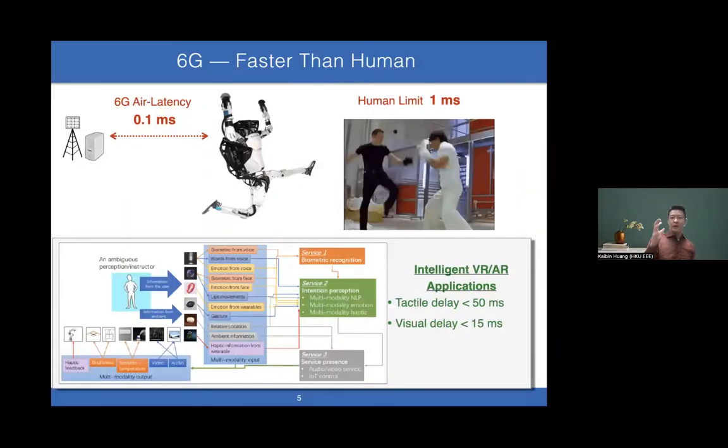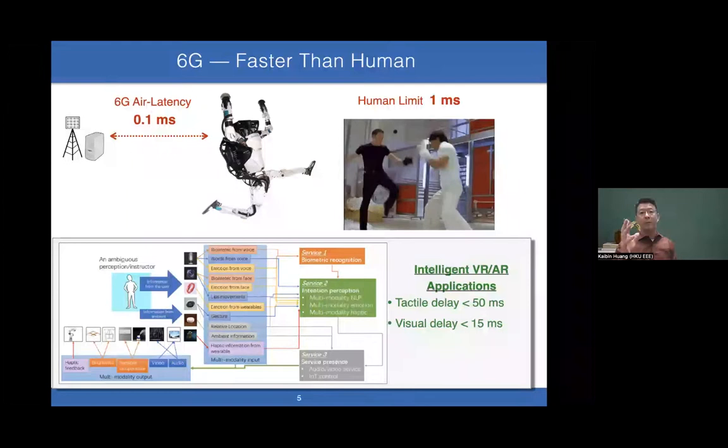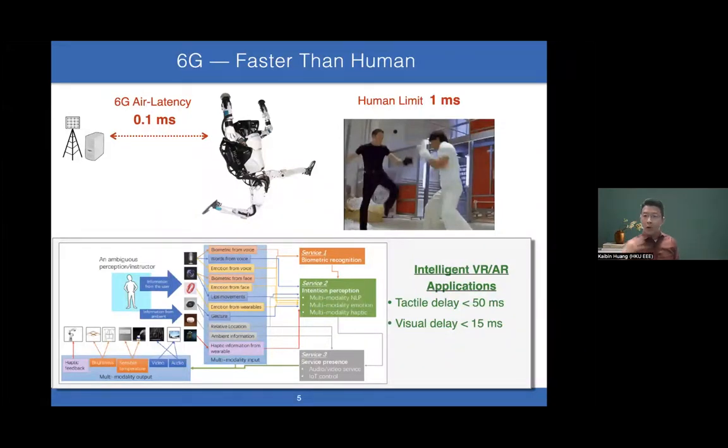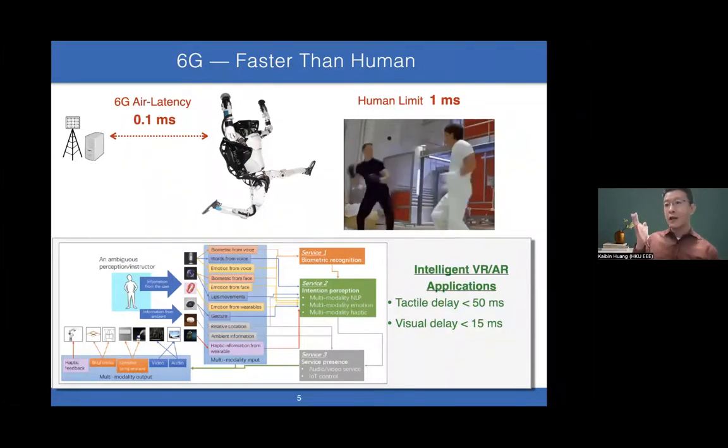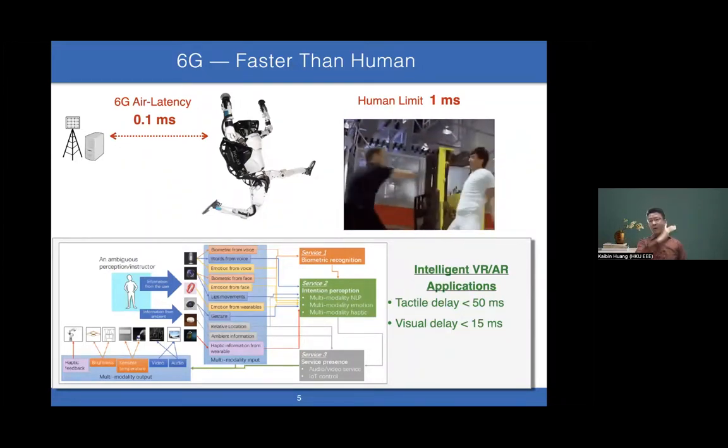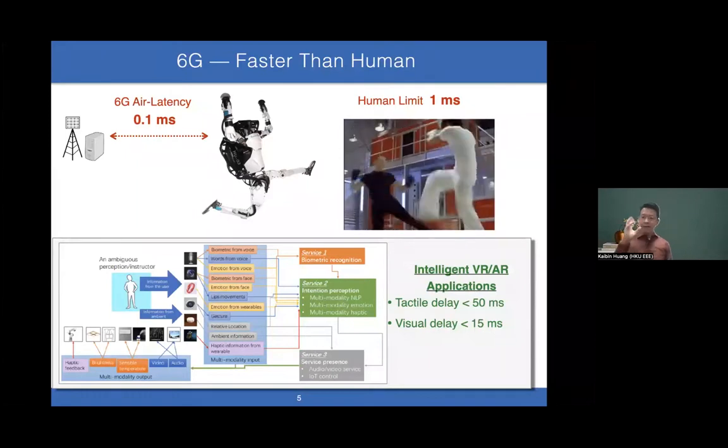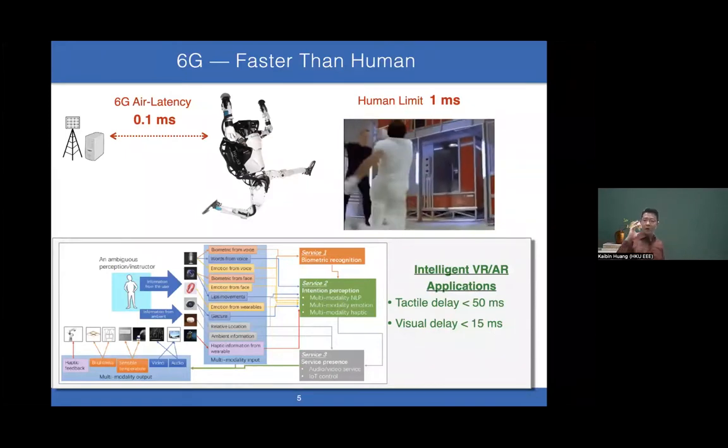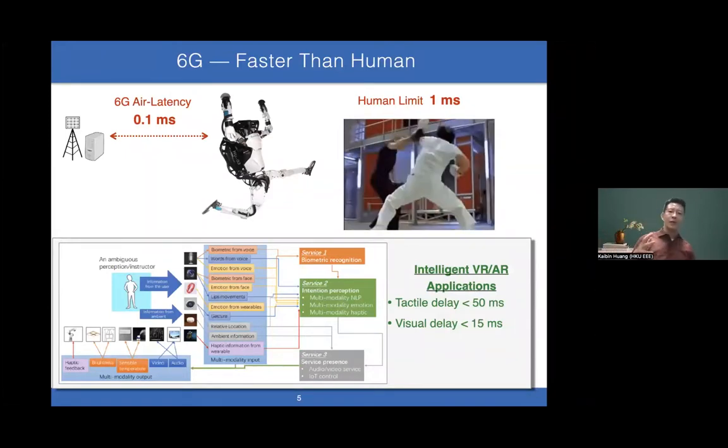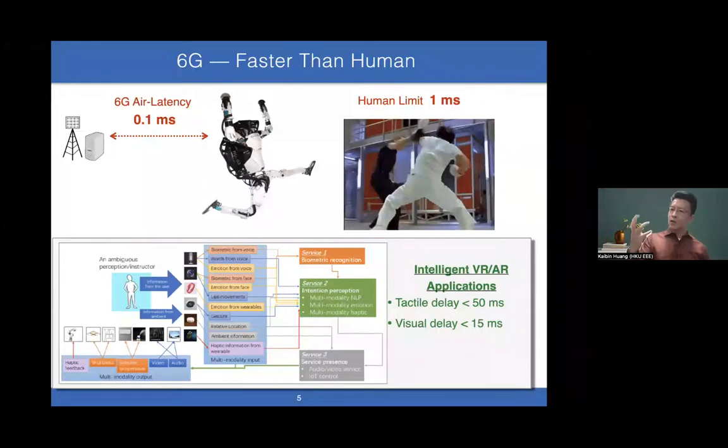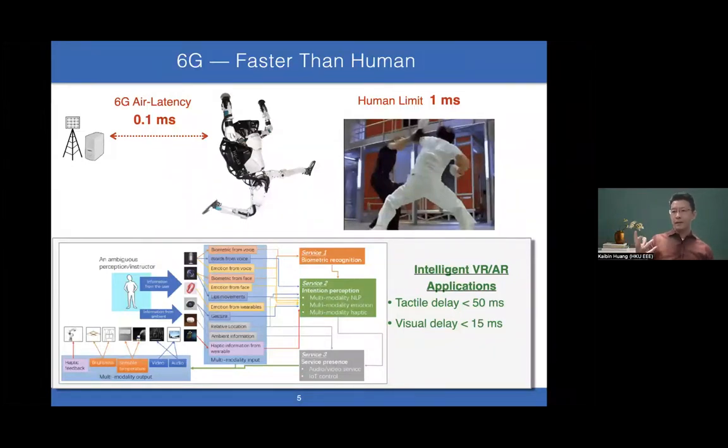6G aims to achieve air latency of 0.1 milliseconds, but humans can only react in one millisecond response time—even Jackie Chan. He's from Hong Kong, by the way. Our networks aim to become faster than one millisecond.